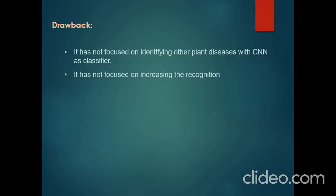The drawback of the existing system is that it has not focused on identifying other plant diseases with CNN as a classifier, which causes a major impact on the result. Additionally, it has not focused on increasing recognition accuracy, so there may be chances of reduced accuracy.